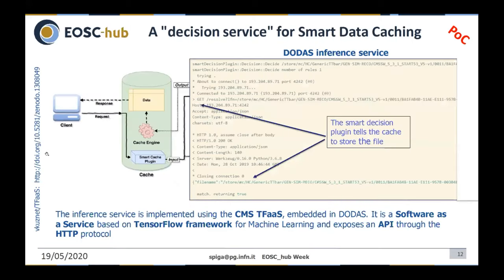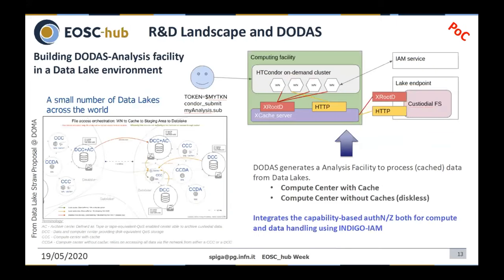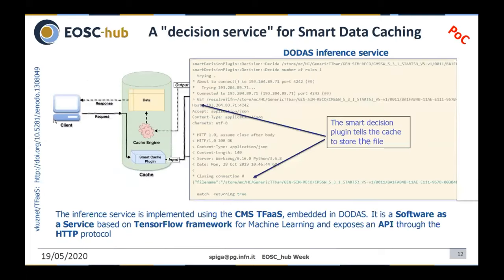Moving to a slightly different domain: this is about using DODAS as a decision service — specifically, implementing smart caching. Think of it as a bot which helps a cache system understand if a file is worth keeping in disk or memory. We have implemented it and are in the process of developing the engine. Everything runs thanks to DODAS, with a TensorFlow-as-a-service platform completely embedded in DODAS, which can be used as an inference system by the cache — or generically coupled to anything requiring a scalable inference approach.